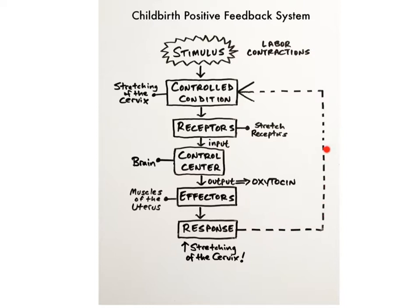This increased stretch then feeds back to the stretch receptors, which causes the brain to release even more oxytocin, which triggers even stronger contractions of the uterus. This is how positive feedback works to intensify the stimulus. This cycle will repeat until the baby is born, the stretching of the uterus stops, and the positive feedback system then comes to a halt.